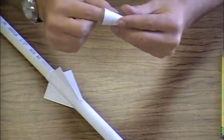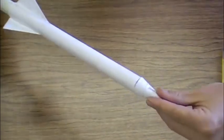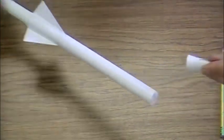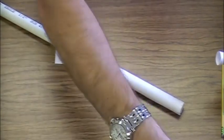The base of the nose cone should be slightly bigger than the rocket body. Once we have the desired fit, tape the seam of the nose cone.